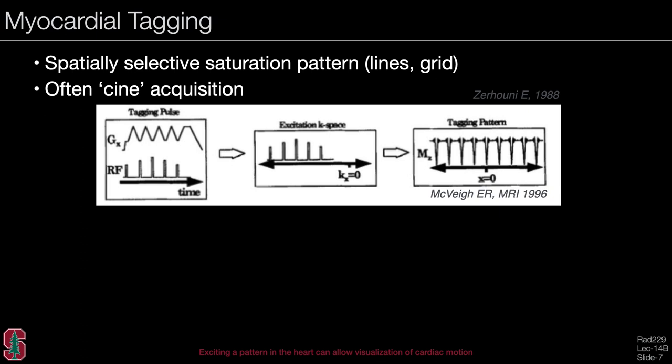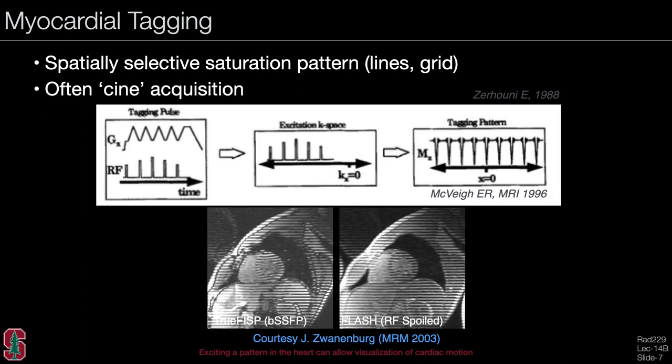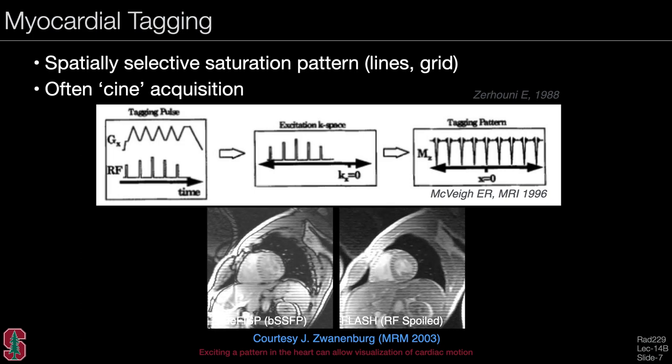Another very interesting form of saturation is myocardial tagging. You can saturate lines or a grid in the image by taking the RF pulse and breaking it into a comb function, so the excited pattern has this periodicity. This is often combined with a cine acquisition to look at the heart. Example images show a balanced SSFP approach where you can see lines in the heart and the myocardium moving. The tags wear off as the signal approaches steady state over the course of the heartbeat. You can also use an RF-spoiled or FLASH approach for a slightly different contrast, and the best choice may depend on the application.